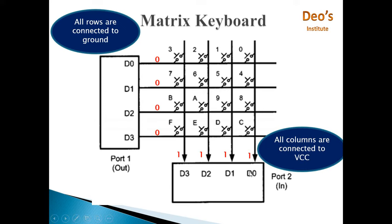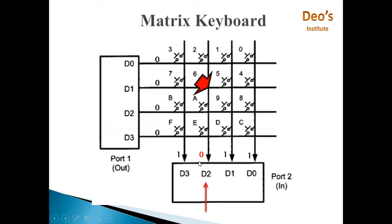If you find any 0 value on port 2, it means that any key on that line is pressed. Now we'll see how the key pressed can be identified.